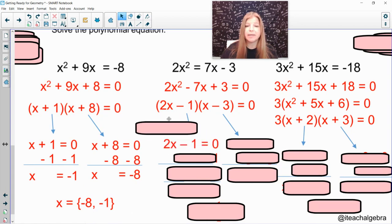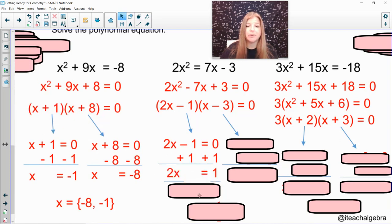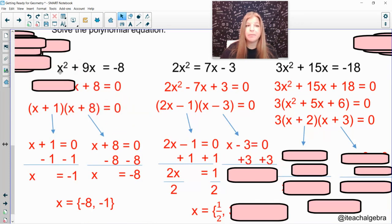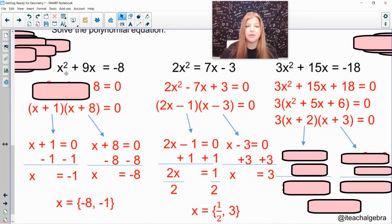Next one, I set 2x - 1 equal to zero. In this, I would add 1 on both sides, and then I would divide both sides by 2, giving me a first solution of 1 half. My second one, I would set x - 3 equal to zero, add 3 on both sides, and I get my second solution of positive 3.